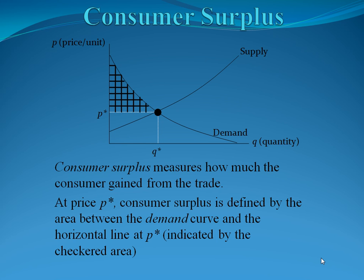At the price P star, consumer surplus is defined by the area between the demand curve, which is our curve that comes right down, and our horizontal line at the equilibrium price. The area between these two curves, represented by the checkered area, is called the consumer surplus.